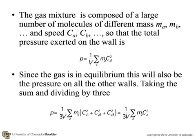Now, the gas mixture is composed of a large number of molecules of different mass, MA, say MB, and so on, and speed CA, CB, and so on, so that the total pressure exerted on the wall is equal to the sum, is equal to 1 over the volume times the sum for a given direction, for a given wall of Mz Cz squared in the one direction. Since the gas in equilibrium is in equilibrium, this will also be the pressure on all the other walls. Taking the sum and dividing by 3, we get that the pressure is 1 over 3 times the volume times the sum of the Mz C squares.